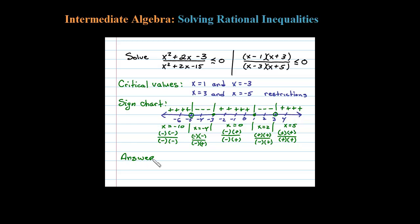Now we use the sign chart to answer the question: when is this rational expression less than or equal to zero? I'm looking at the sign chart and shading all x-values that yield a negative result. Converting the shading to interval notation: we have an open dot at the restriction negative 5, so we write negative 5 to negative 3 with a round parenthesis at negative 5 and a square bracket at negative 3, union 1 to 3 with a square bracket at 1 and a round parenthesis at 3. All these x-values will yield a negative answer.